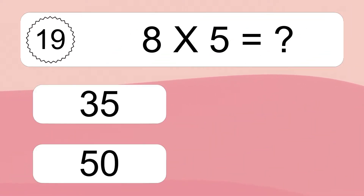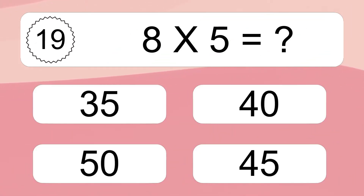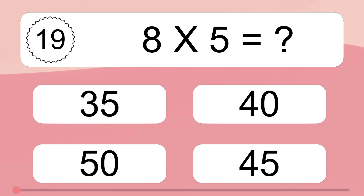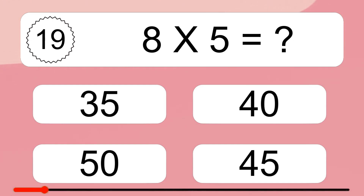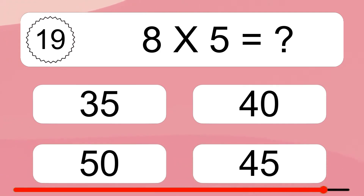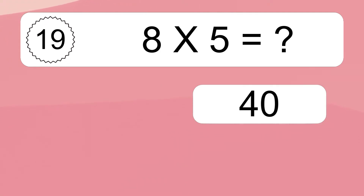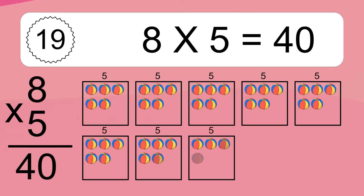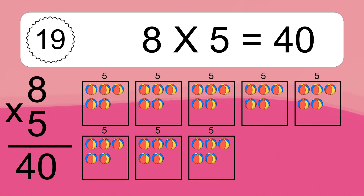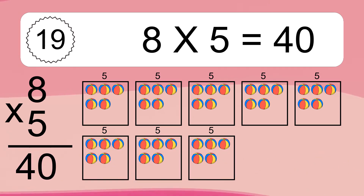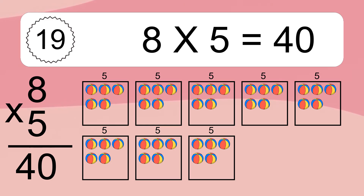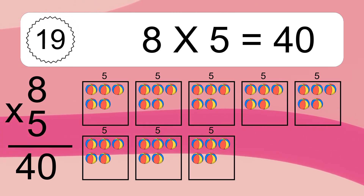8 times 5 equals what? 8 times 5 equals 40. We have 8 boxes, and each box has 5 colorful balls inside. If you count all the balls in all the boxes together, you will have 8 times 5 balls. This equals 40 balls.